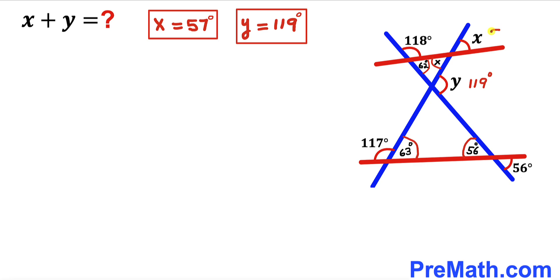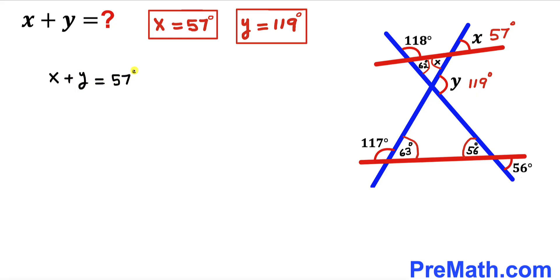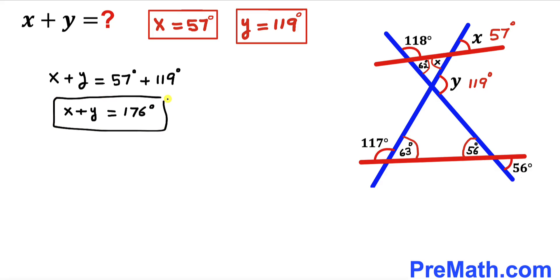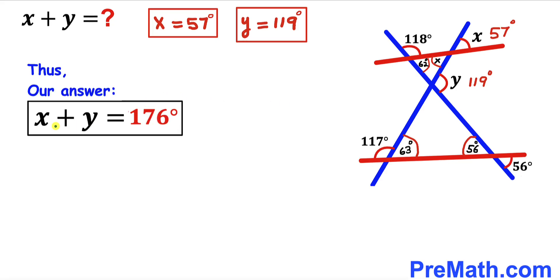So our angle x is 57 degrees. Here's our final step: we calculate x plus y. Our x value is 57 degrees and y value is 119 degrees. So x plus y equals 57 degrees plus 119 degrees, and our sum of angles x plus y equals 176 degrees.